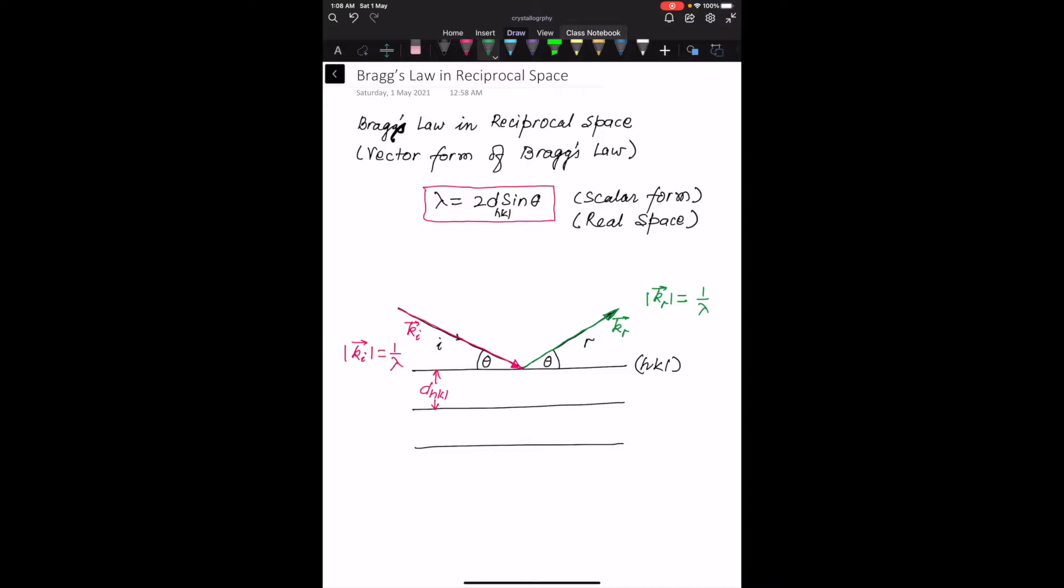To formulate this law in reciprocal space, we need a quantity which is the difference or the scattering wave vector, which we define as delta K. Delta K is nothing but the reflected wave vector minus the initial wave vector, Kr minus Ki.